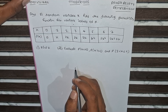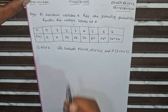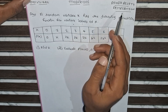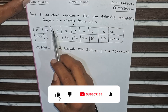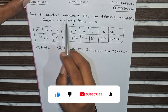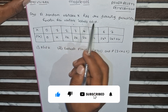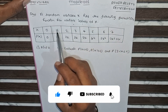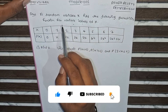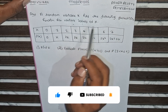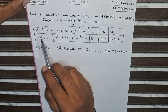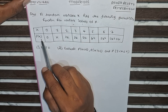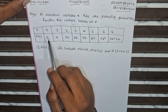Hello everyone. Today we are going to solve a very important problem from module 1, probability distribution. The question is: a random variable X has the following probability function for various values of X — a probability function is given.